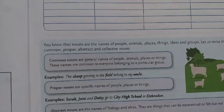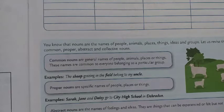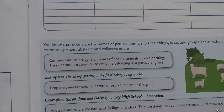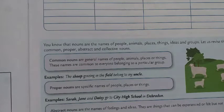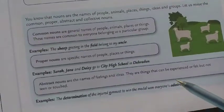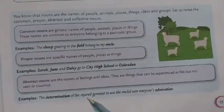Abstract nouns are the names of feelings and ideas. They are things that can be experienced or felt but not seen or touched.